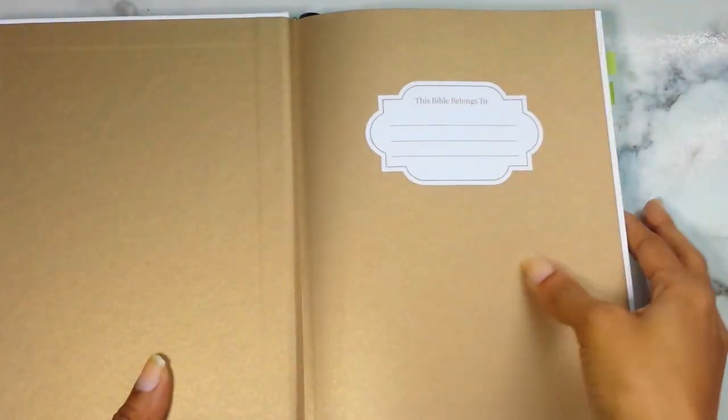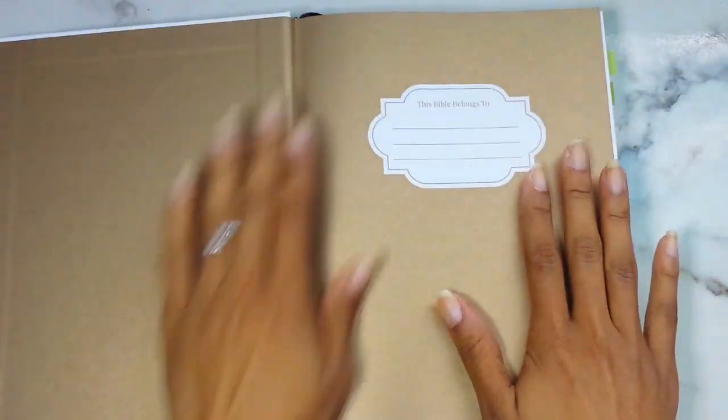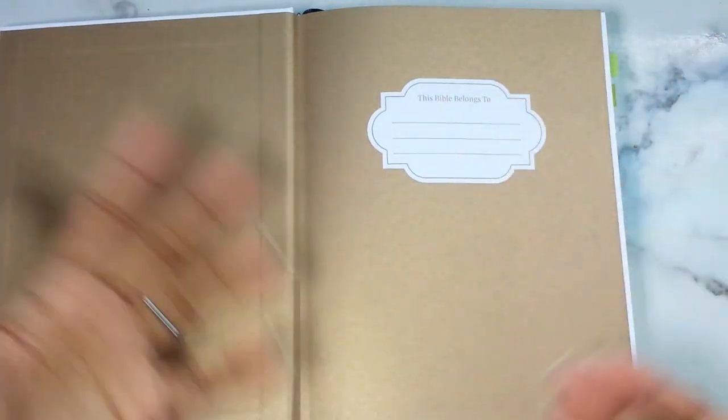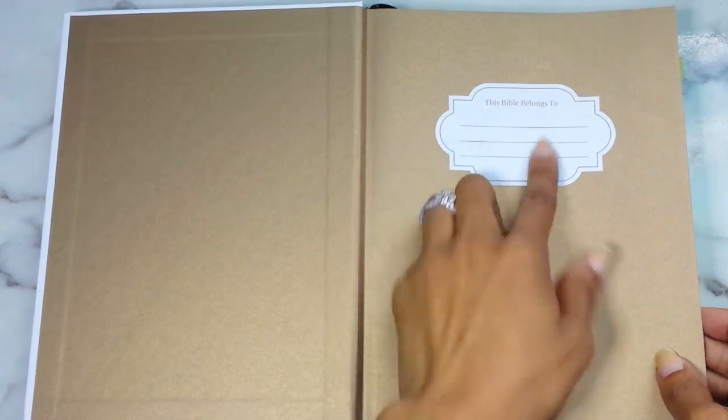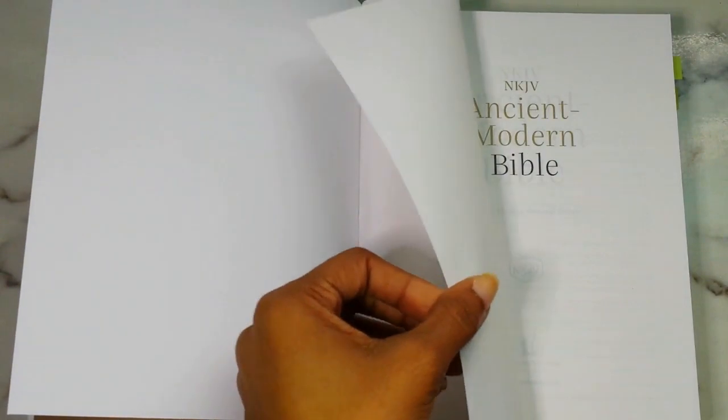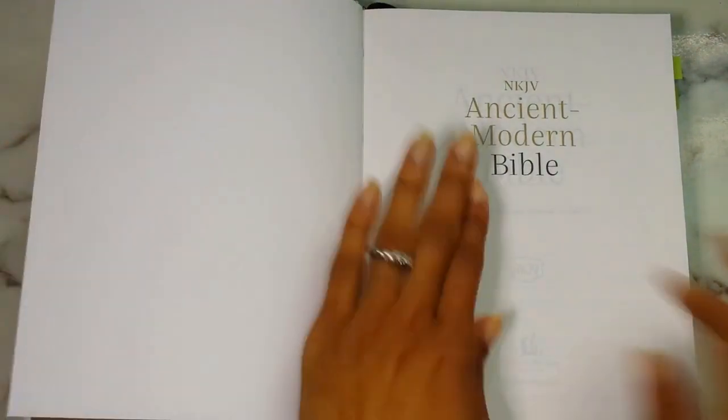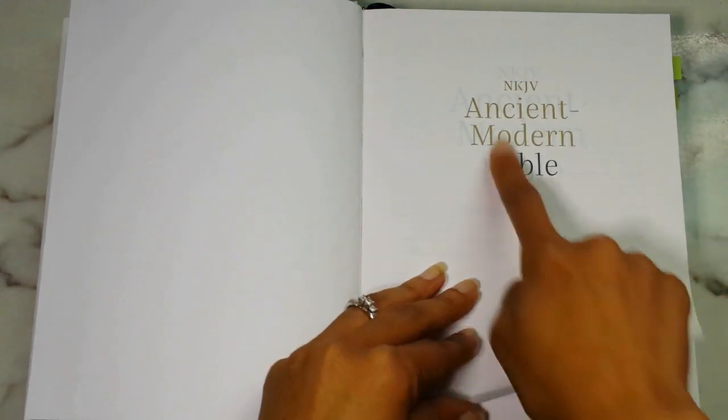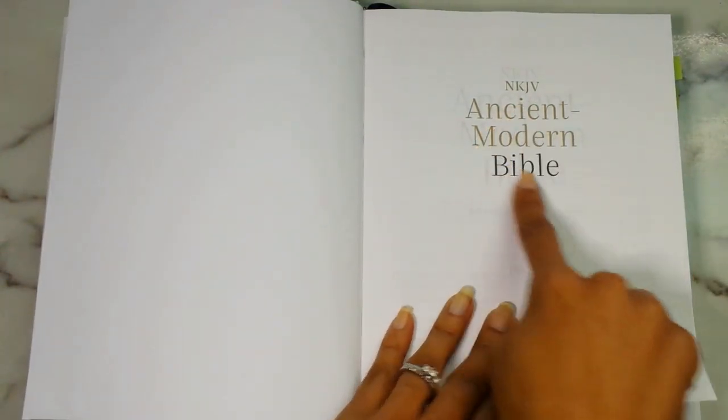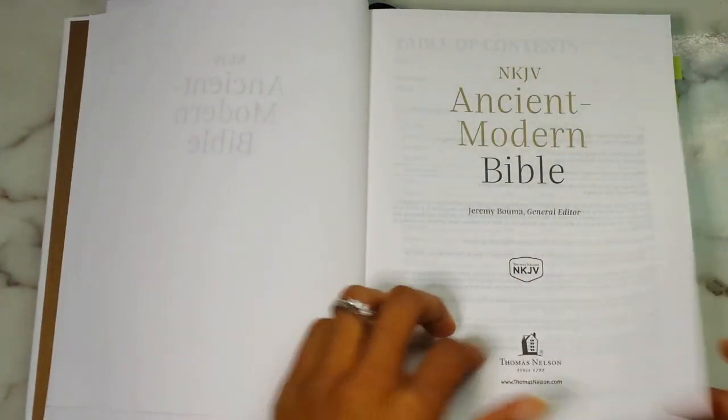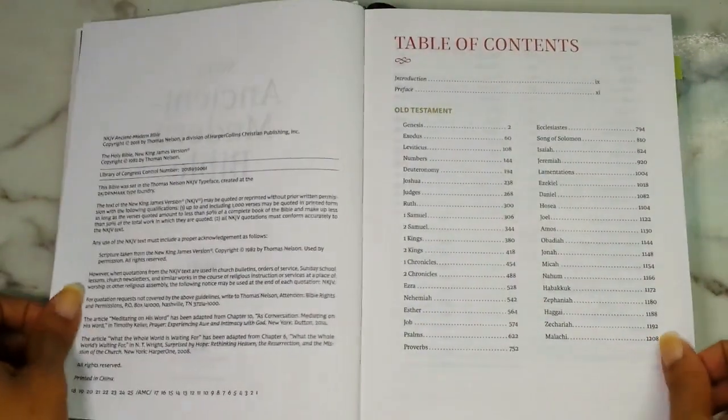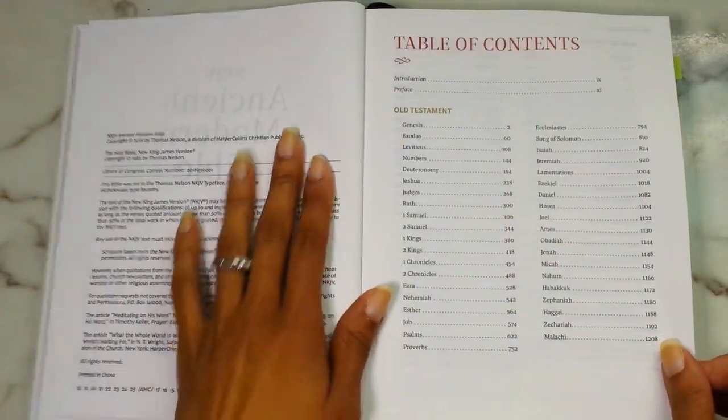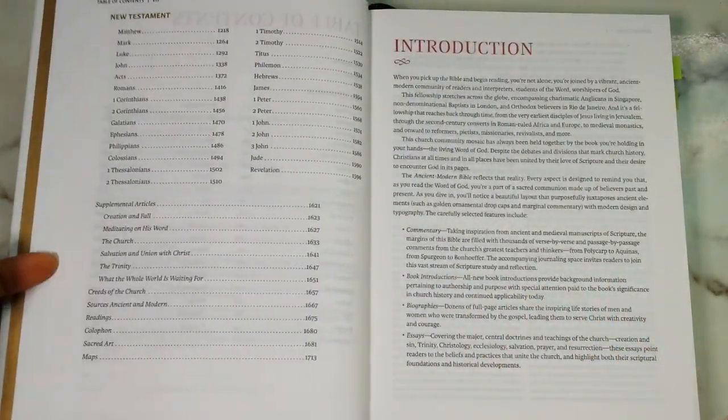Let's dive in. So I do have things marked off to show you guys. Here's your presentation page. It is really nice with this gold metallic kind of presentation page and says 'This Bible Belongs To.' The pages on this I will say are really thin, so I would say use a regular pen. NKJV Ancient Modern Bible title page. The general editor is Jeremy Bouma.